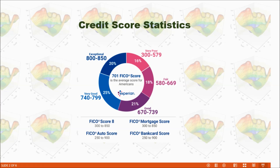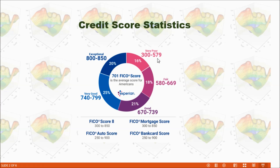But they also consider other factors, for example your income, your family, and other factors. This is the distribution of credit scores according to FICO. About 20% of people belong to the exceptional category with a credit score from 800 to 850, and 16% of people belong to the very poor category with a credit score of 300 to 579.